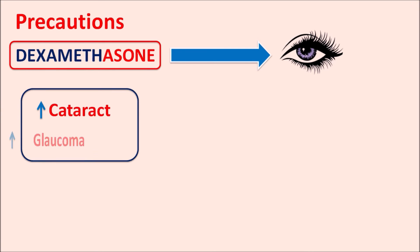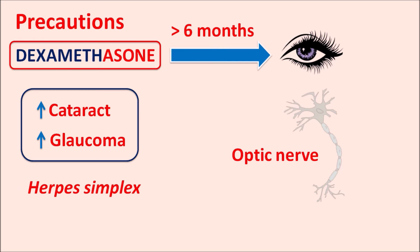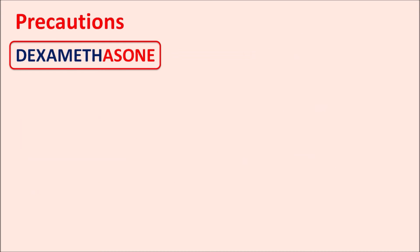Dexamethasone can increase the risk of cataracts and glaucoma, with intraocular pressure potentially increased. This effect is observed when the drug is used for greater than six months. It can also produce damage to the optic nerve. Since this drug reduces immunity, it can increase the risk of herpes simplex infections, which can further damage the optic nerve. Care should be taken to check visual acuity as well as any development of herpes simplex infections.